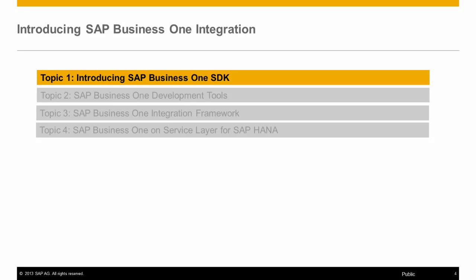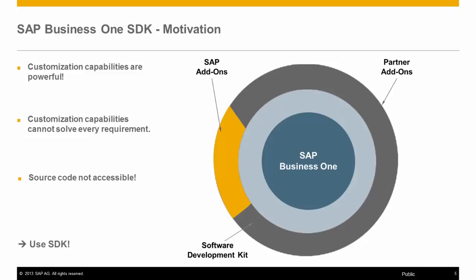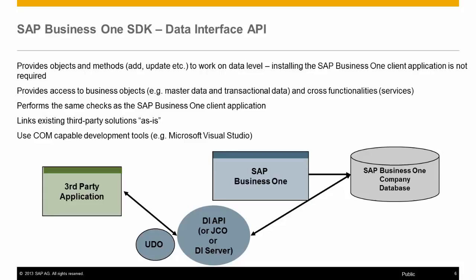Let's start by looking at the SAP Business One Software Development Kit. The SAP Business One SDK is a set of APIs that allow for integration with SAP Business One at a data and user interface level. The SAP Business One core functionality is kept separate, and access to data in and out of SAP Business One is through the two APIs.